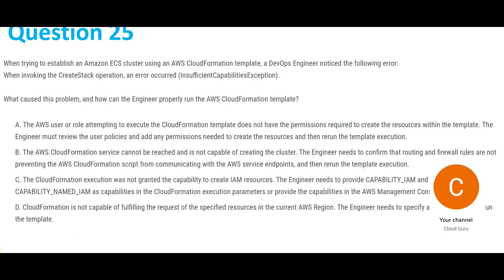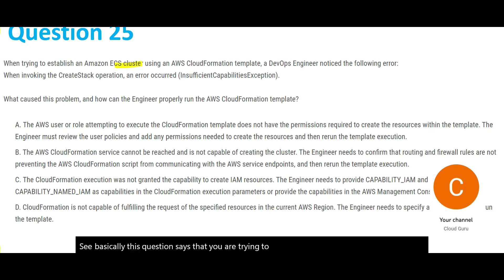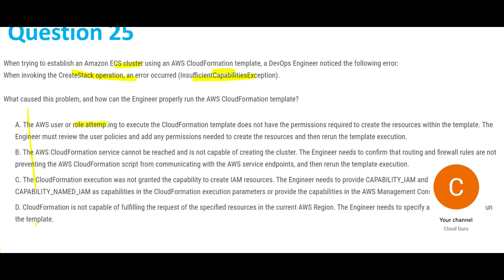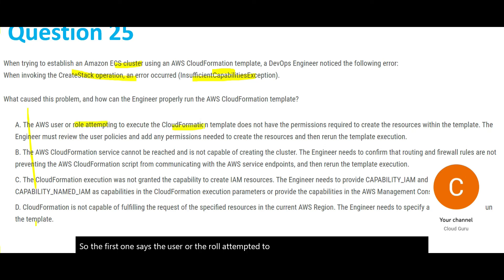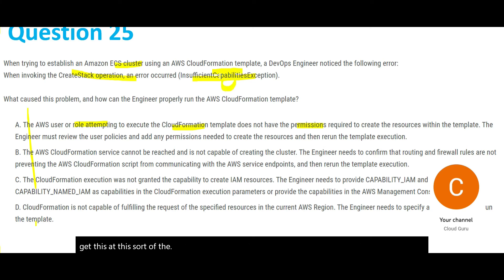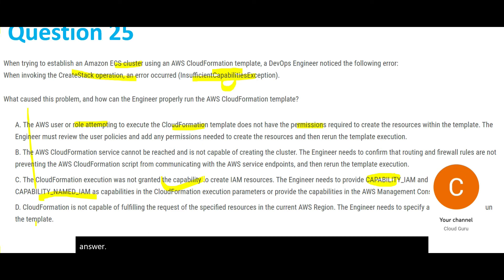This question says you are trying to establish an ECS cluster and getting a CreateStack operation error: InsufficientCapabilitiesException. The first option says the user or role doesn't have permission — but when there is a permission issue you don't get this error. The problem is that the capabilities CAPABILITY_IAM and CAPABILITY_NAMED_IAM need to be provided. That is the answer.